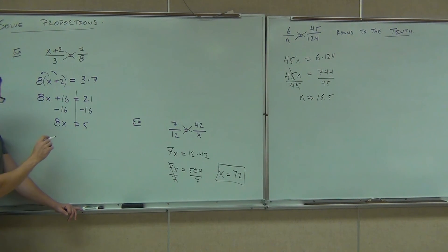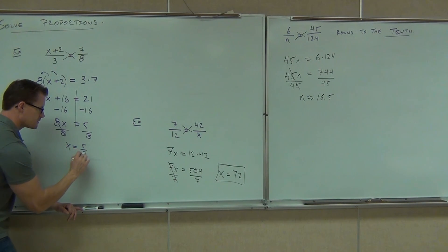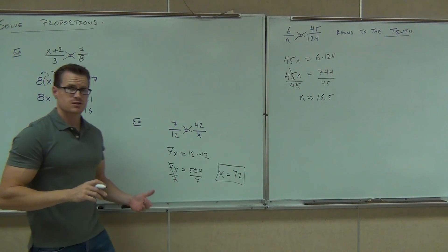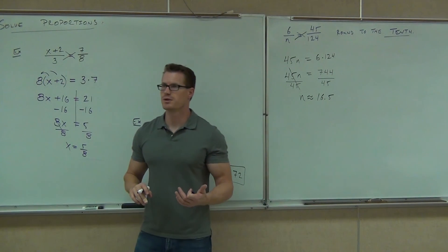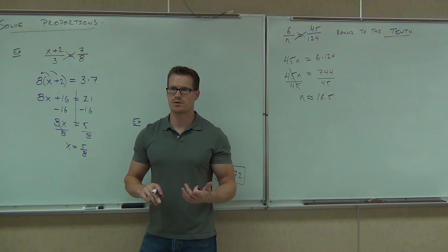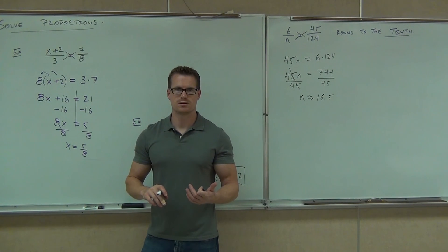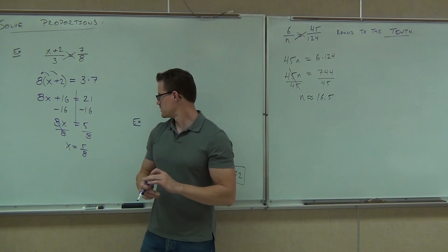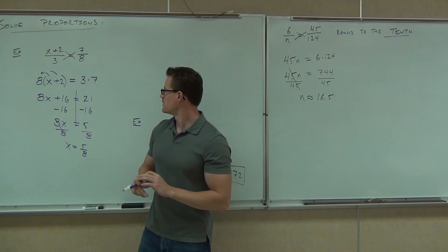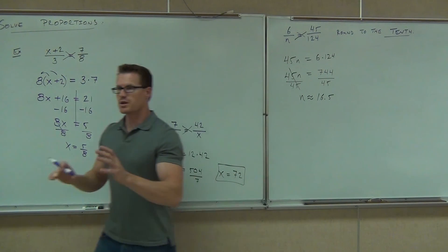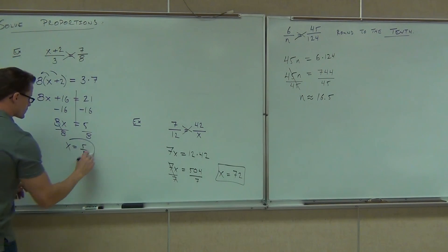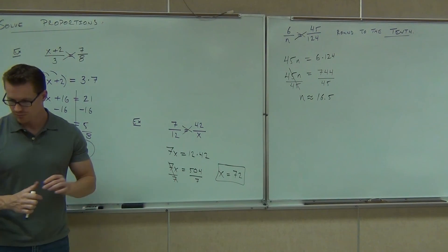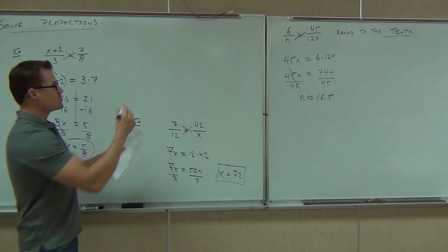How do you get rid of the 8? So x equals 5 eighths. You can do 5 eighths, or you can give me, let's see, 0.6125, I think, if you do that on your calculator. Is it? 21. Yeah. So you can leave it at 5 eighths, or give me the decimal there, it doesn't really matter. Could you do the same thing here?